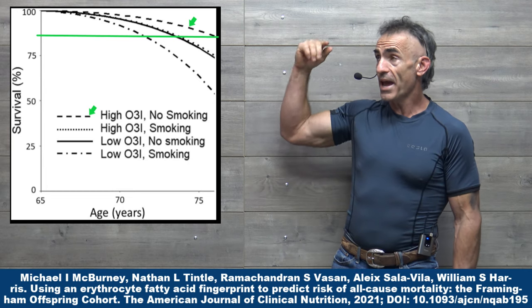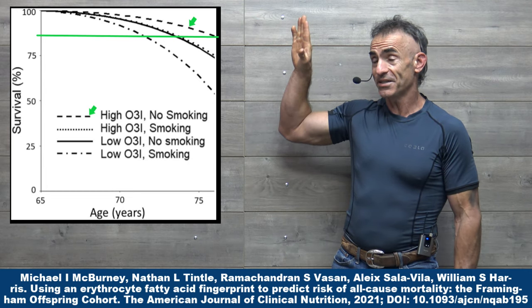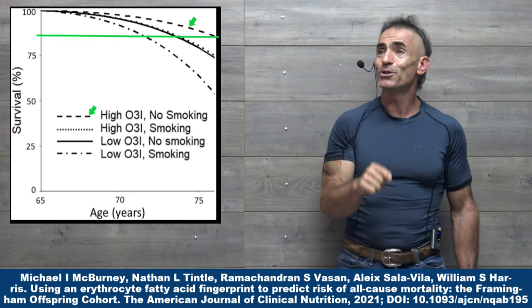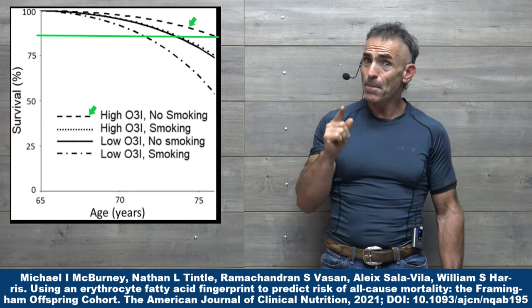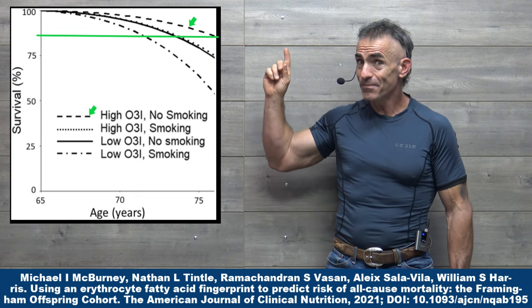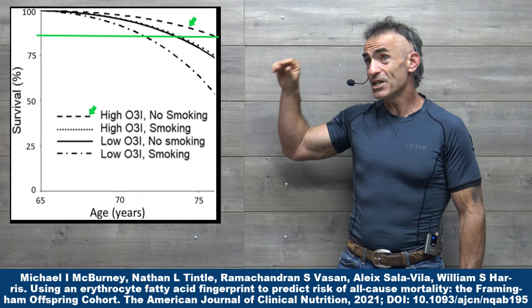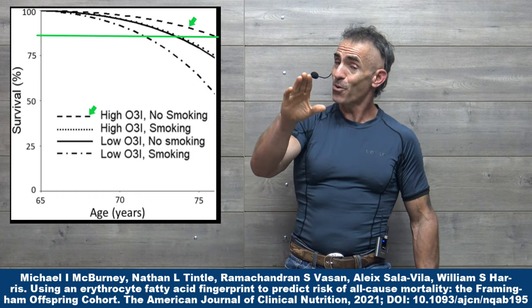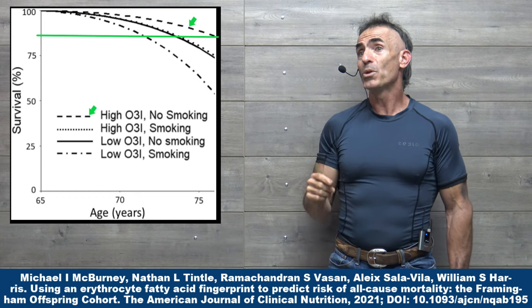Look at the age range. We're starting at age 65. But also too, check this out. A person that has a high omega-3 index and is a smoker, life expectancy is pretty much correlated.